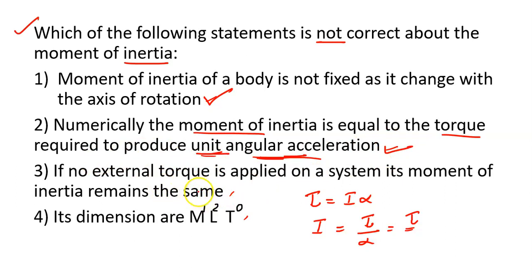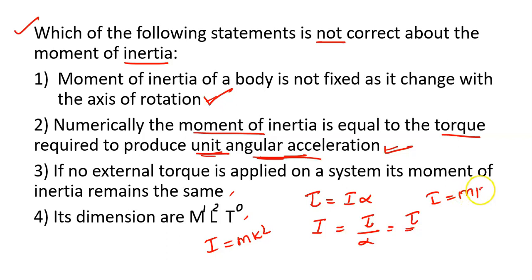Evaluating Option 3: if no external torque is applied on a system, its moment of inertia remains the same — that is NOT correct. Moment of inertia depends on mass distribution: I = mk² or I = mr². With no external torque, angular momentum is conserved, but the moment of inertia can still change if mass distribution changes. The dimension of moment of inertia is ML², which is correct for Option 4.